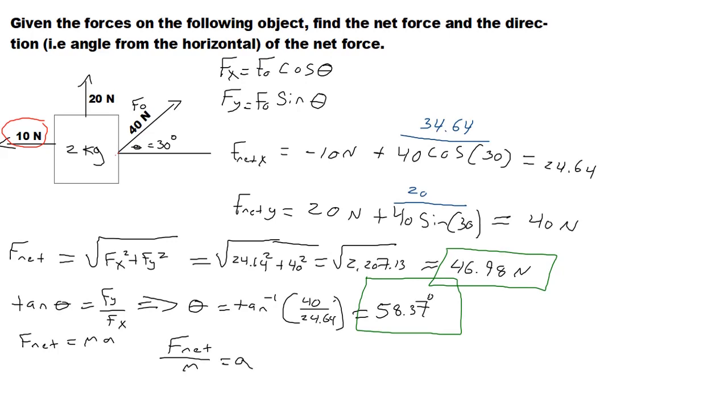That is 46.98 divided by 2 kilograms, and that's going to give you 23.49 meters per second squared. That direction is going to be the same as the net force, this angle 58.37 degrees.